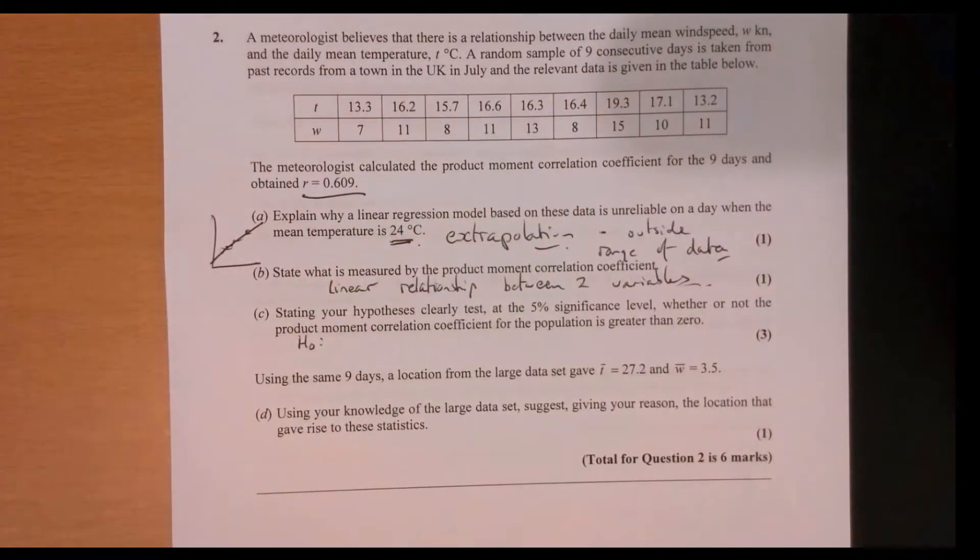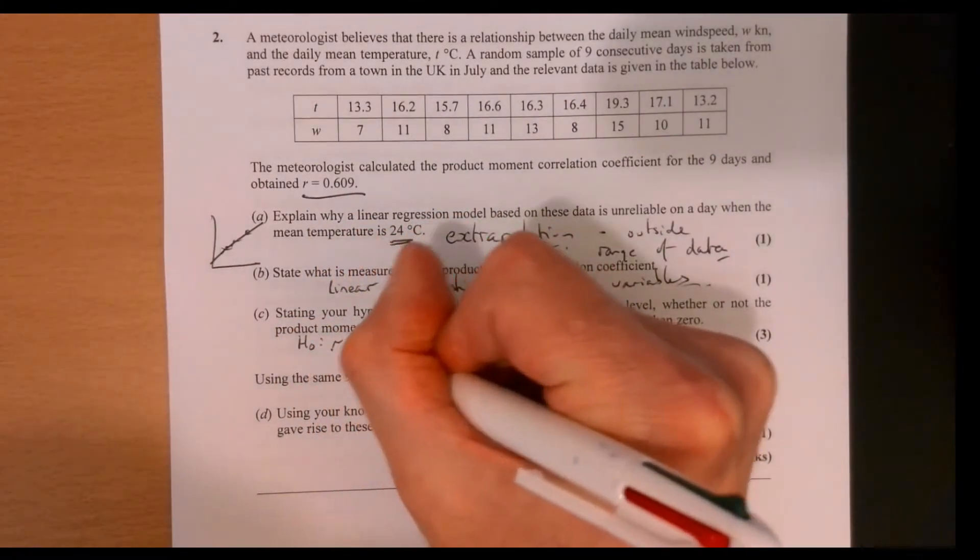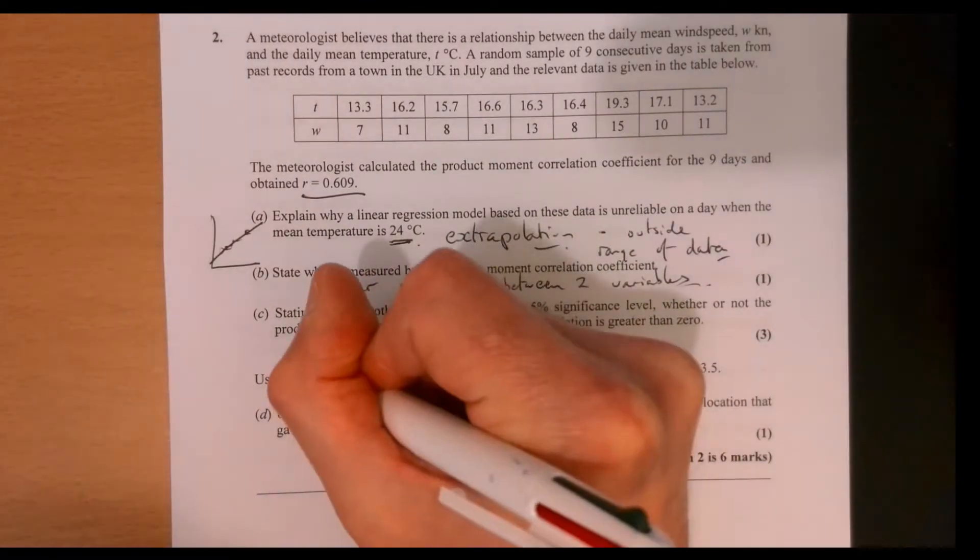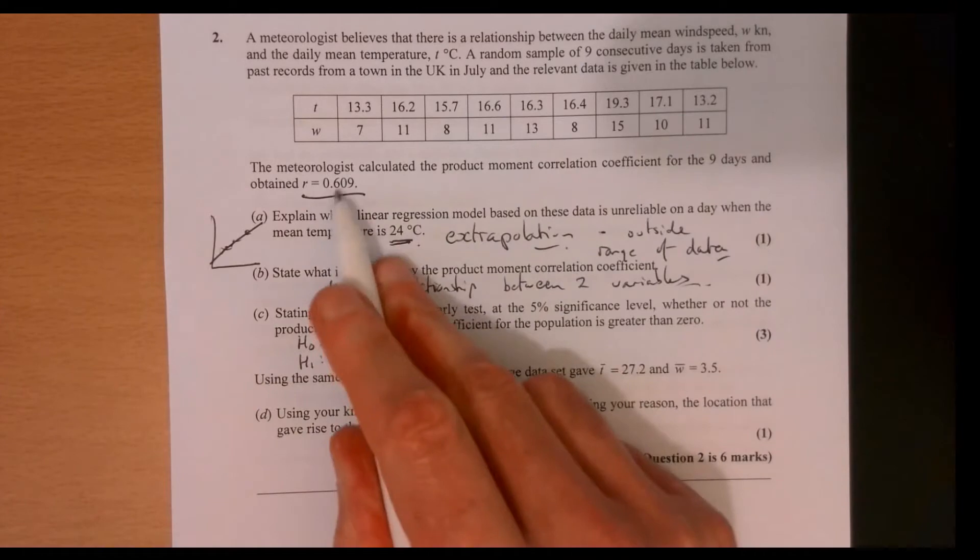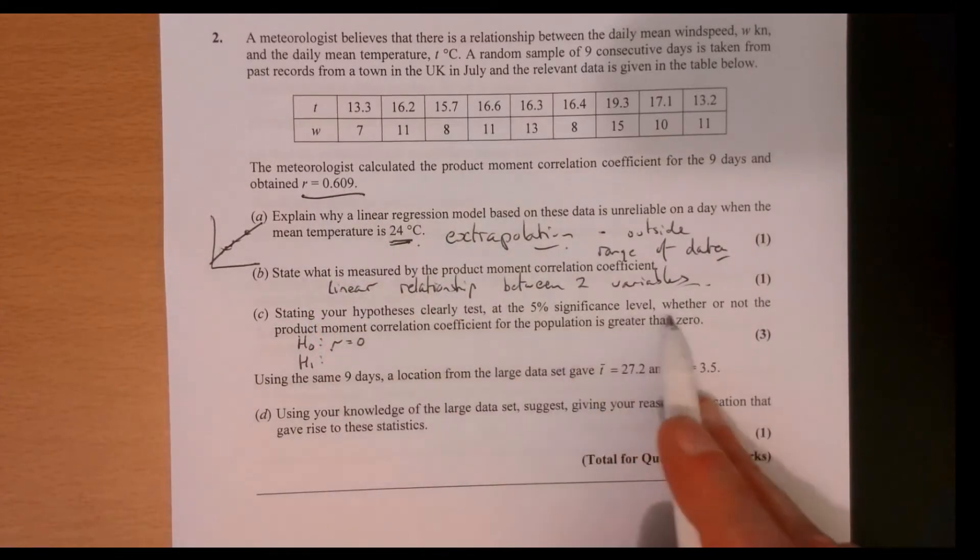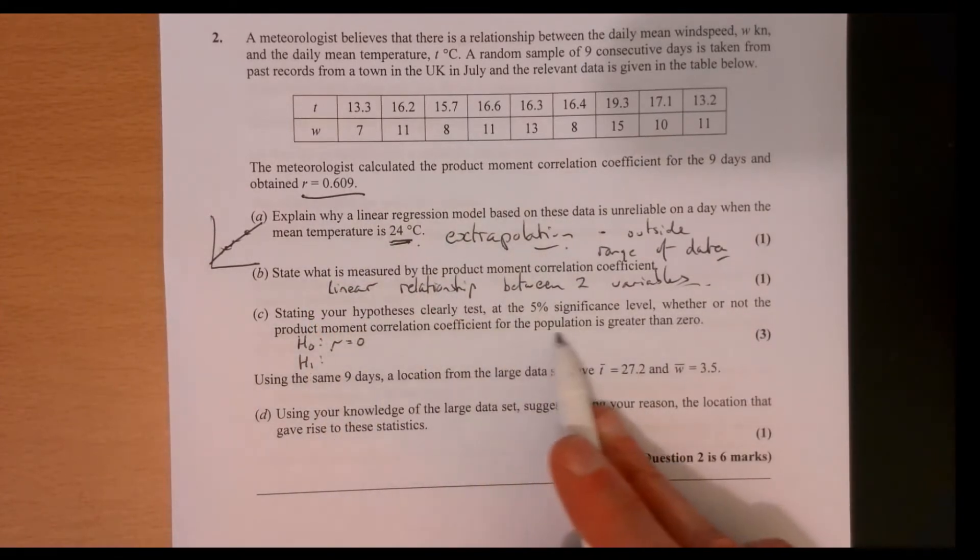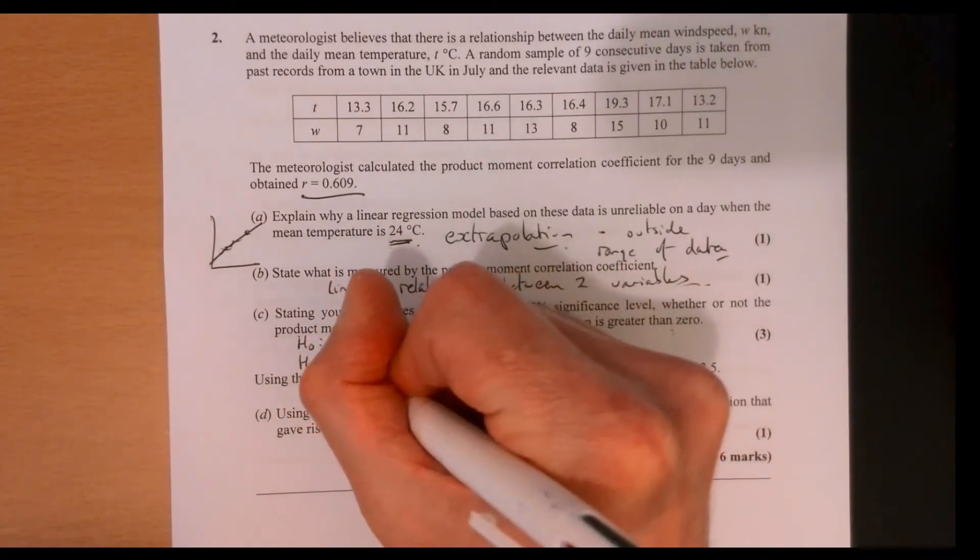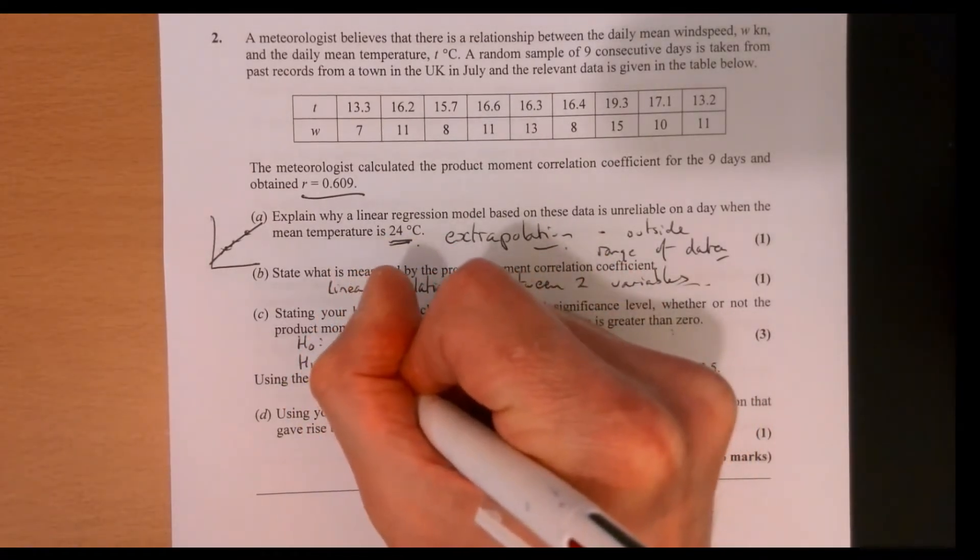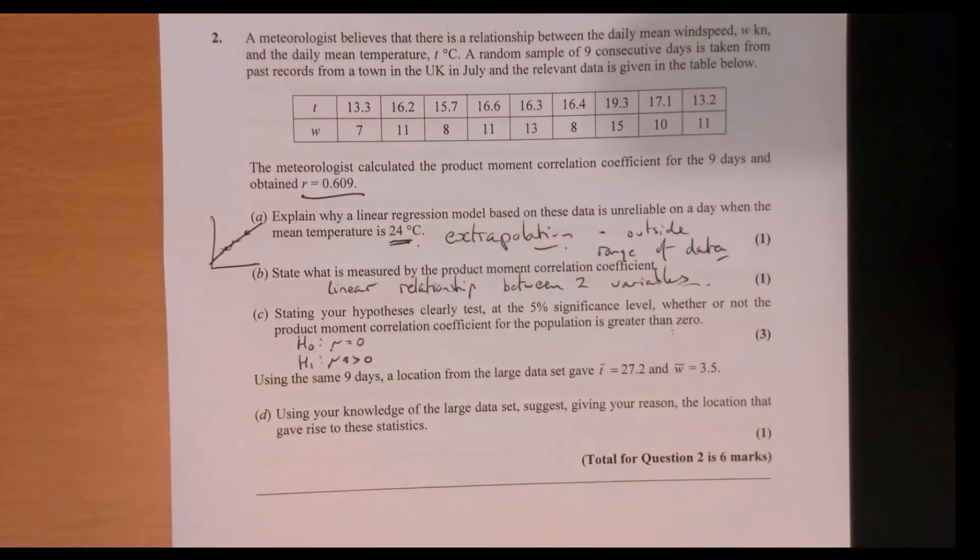So you need to write a null hypothesis. So basically, your correlation is equal to zero and an alternative hypothesis. Now it's one tailed. OK, we're looking, it actually says whether or not the product moment correlation coefficient is greater than zero. So we just need to say greater than zero.